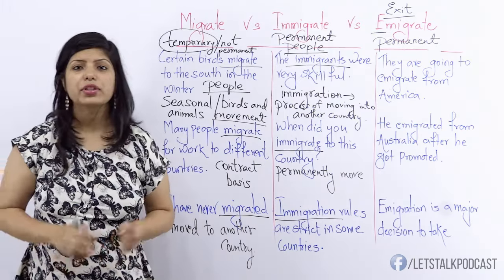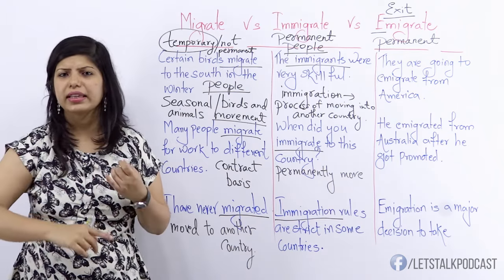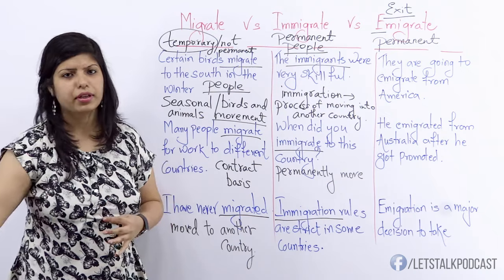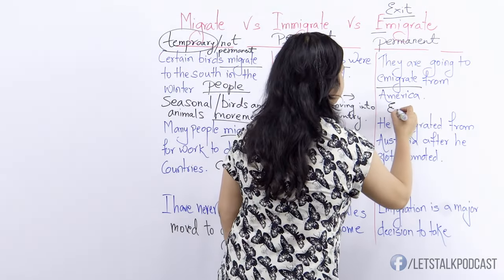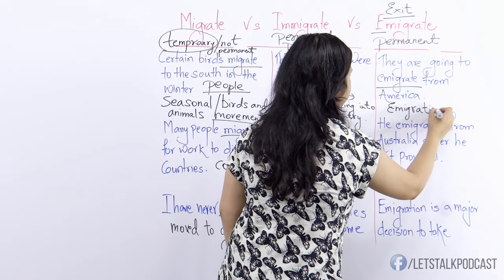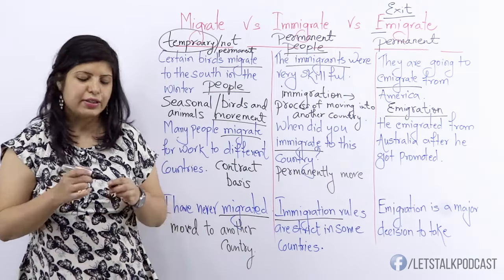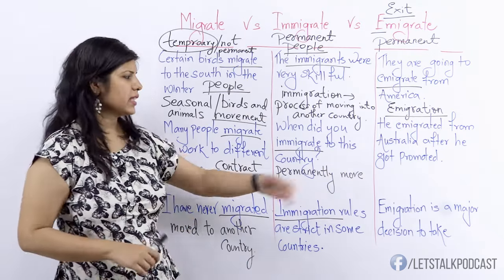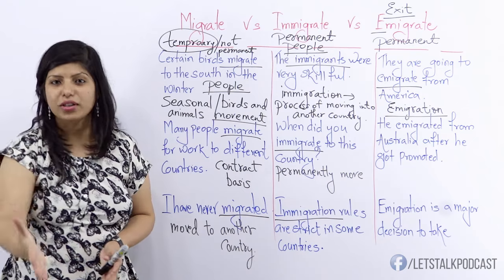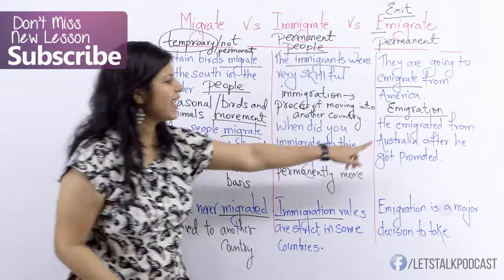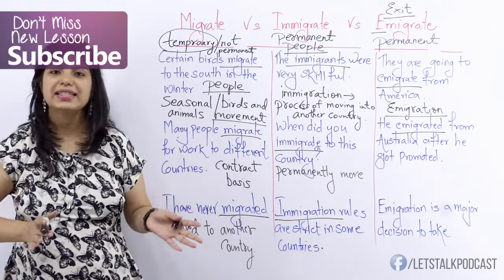The first example: they are going to emigrate from America, which means they are going to permanently move out of America — for whatever reason, studying, a job, getting married to someone from a different country. Emigrate is the verb form. The next example: he emigrated from Australia after he got promoted. Say if someone was working in Australia and got a promotion but had to move out of the country permanently to take it up — he said yes and he emigrated, he moved out permanently from Australia. Emigrated is the past tense of emigrate.